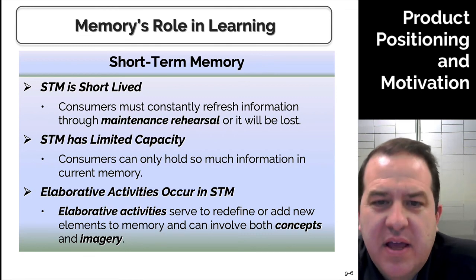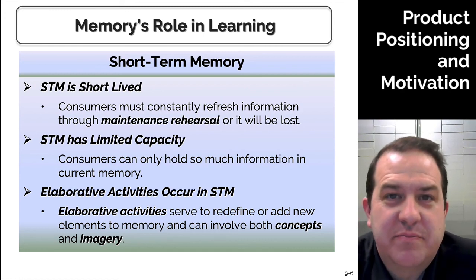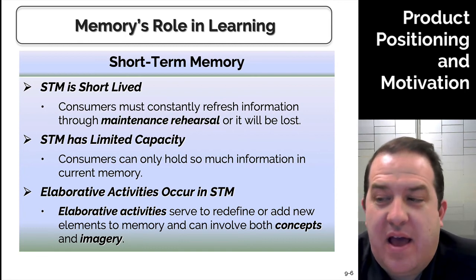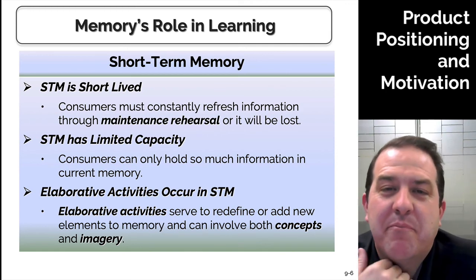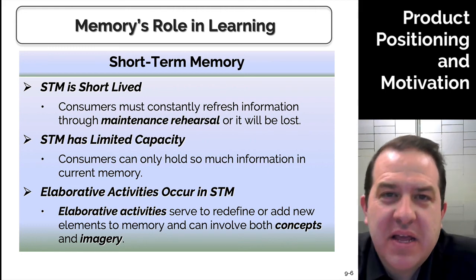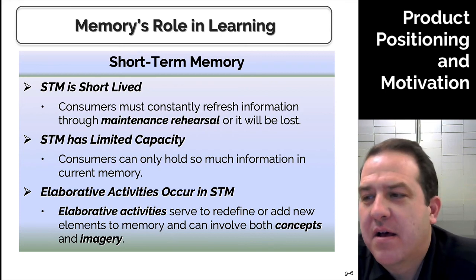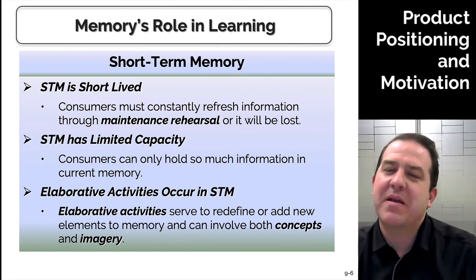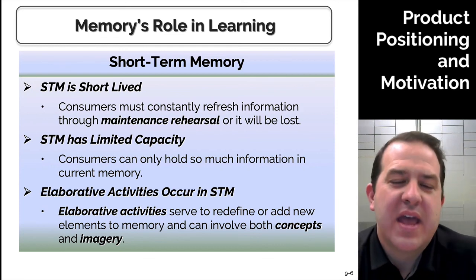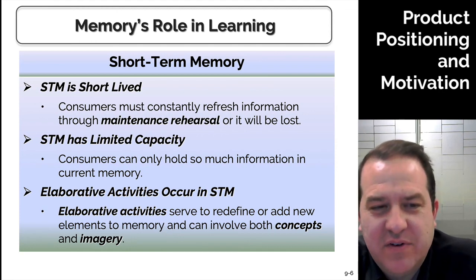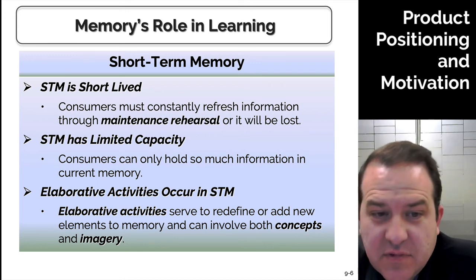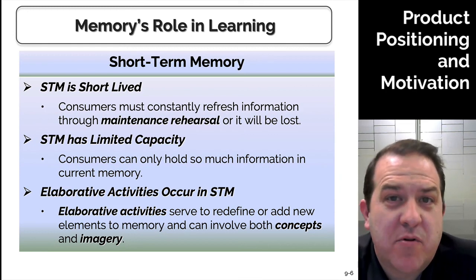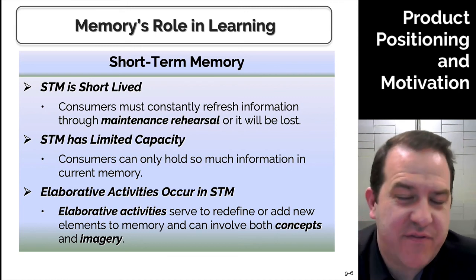STM is short-lived — if we don't keep things active, they'll be forgotten. I'm really bad with numbers; if you told me a phone number, I'd forget it. However, when I meet somebody, I can usually recall names pretty fast — I might see someone 20 years later and remember exactly who they are. Our STM has limited capacity; consumers can only hold so much information in current memory. A good analogy: short-term memory is like RAM, and long-term memory is the hard drive.